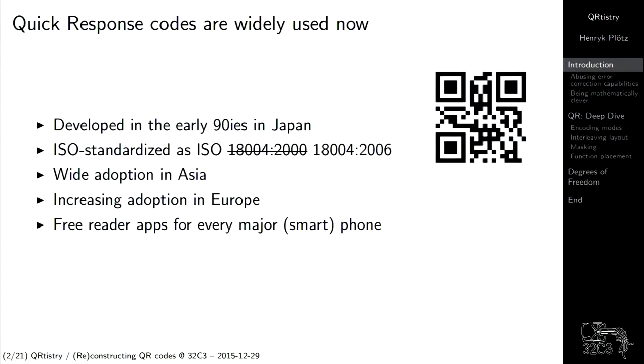Before the talk I met a couple of people who didn't even know what a QR code was, that it is some kind of barcode. QR stands for Quick Response. It was developed in 1994 for the automotive industry in Japan, in order to store more data than a conventional flat 2D barcode. It has since been standardized as ISO 18004, first standardized in 2000 and updated in 2006. The 2000 standard is no longer valid.